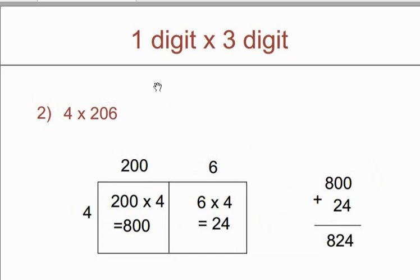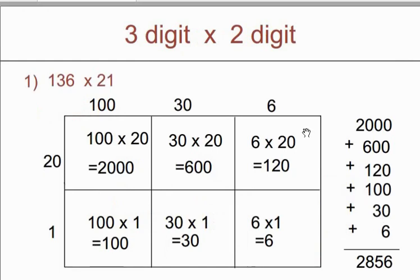Same way, another example of 1-digit by 3-digit number: 4 multiply by 206. This is a 3-digit number but we are taking just 2 boxes, because in the tens place the value is 0, and as we know 0 multiplied with any number gives 0. So we write 200 plus 6 for 206 and write 4. Take 200 and 4 — we will get 800. Take 6 and 4 — 6 multiply by 4 is 24. Summation gives us answer 824.